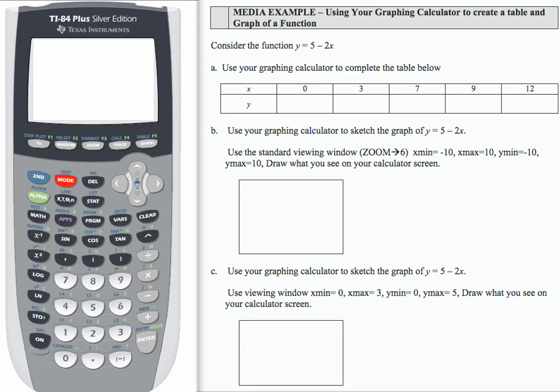In this example, we're asked to consider the function y equals 5 minus 2x, then use our graphing calculator to complete the table. We can do that on our graphing calculator by pressing the y equals button, and then we want to enter the function 5 minus 2, and then the x is here on the second row.